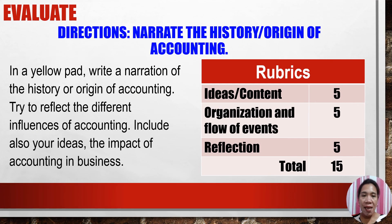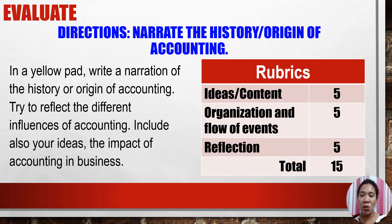I think everyone is ready for the evaluation. You are going to narrate the history or origin of accounting. On a yellow pad, write a narration of the history or origin of accounting, reflecting on the different influences of accounting and including your ideas on the impact of accounting in business. The rubrics are: ideas and content — 5 points; organization and flow of events — 5 points; and reflection — 5 points, for a total of 15 points. Don't forget to be ready with that during the retrieval of your modules.